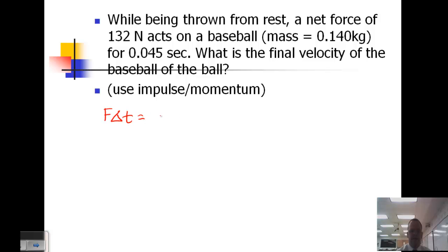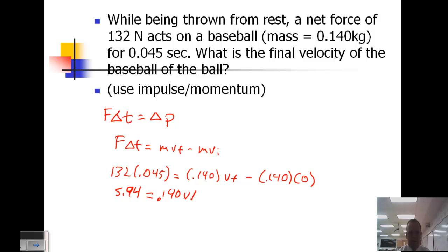So we've got F∆t equals change in momentum. We know change in momentum is mass times velocity final minus mass times velocity initial. In this case, we have 132 Newtons acting for 0.045 seconds. The baseball has a mass of 0.140 kilograms. We're looking for its final velocity. It has a mass of 0.140 and its original velocity is zero. So we'll do 132 times 0.045, which gives us 5.94 equals 0.140 V_final.